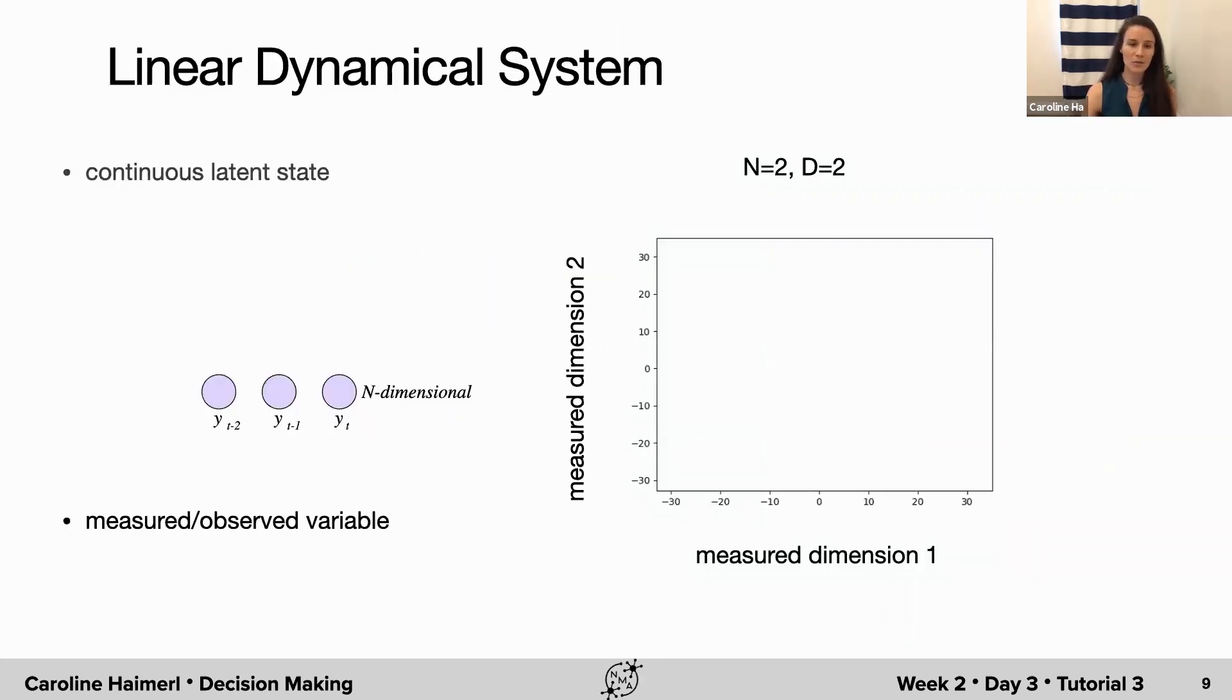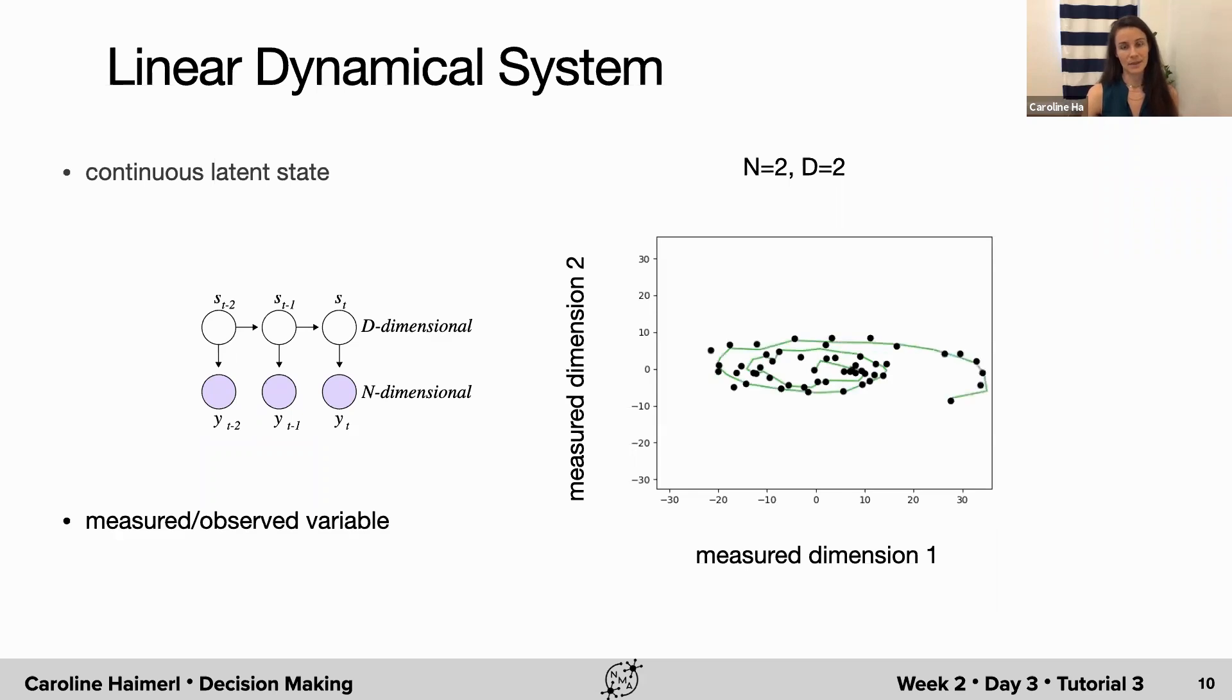So now let's assume we have some data measurements Y. This could be a high-dimensional dataset, but in order to be able to visualize the data, we're going to pick out two dimensions here. And as you see, this data is collected over time. Our aim is to find a latent process that underlies our measured data. Typically, this would have a lower dimension D, but for visualization, we will plot it in the same two dimensions.